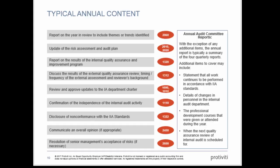Annual content links to a fair number of IIA standards — things that internal audit needs to communicate to the committee, many of which can be done annually. These include: report on the year in review with themes and trends; update the risk assessment and plan; and report on the results of the quality assurance and improvement program. Remember, a quality program is supposed to be periodic, ongoing, and external — not just every five years. There's supposed to be ongoing activity, and you should be reporting on that.